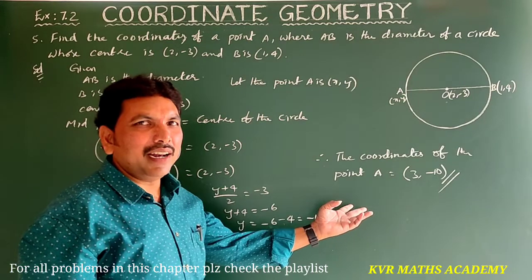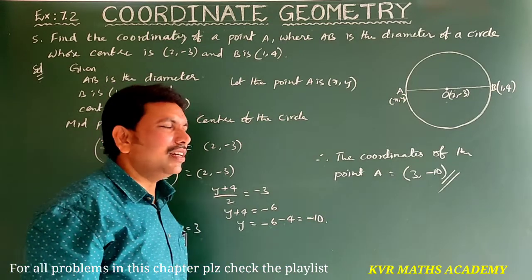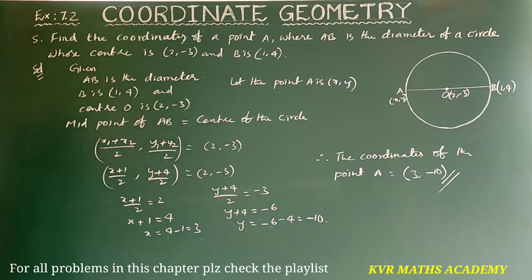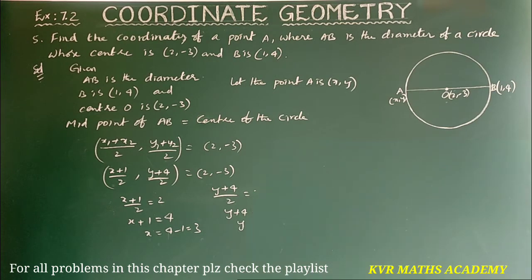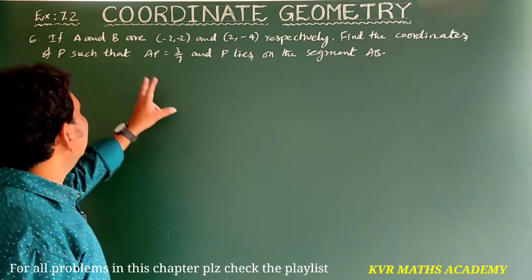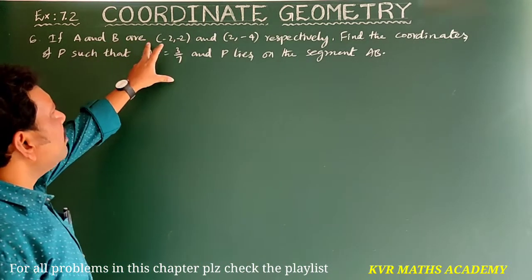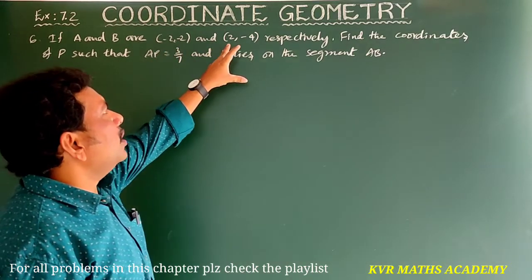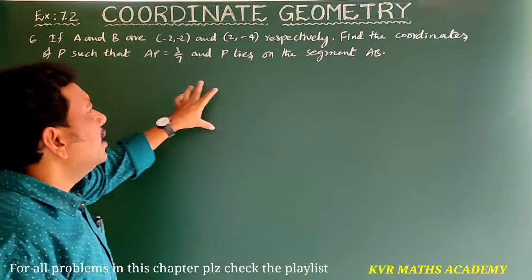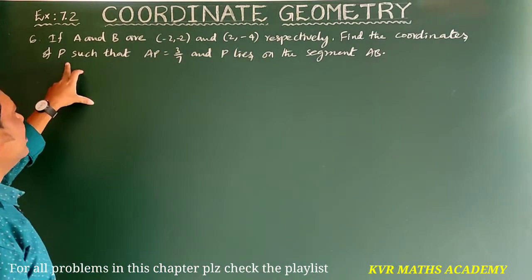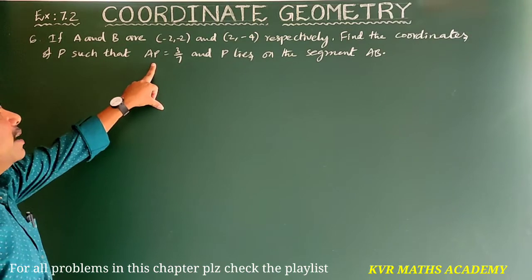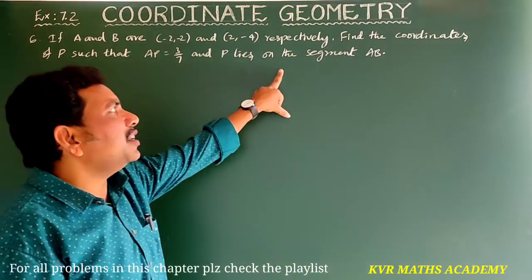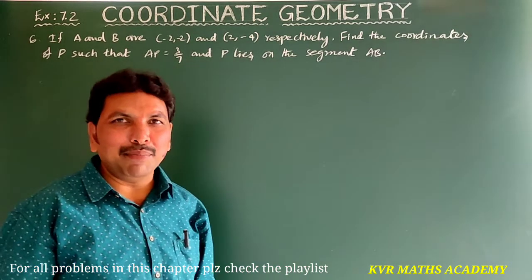Have you understood clearly? Next, the sixth question. If A and B are (−2, −2) and (2, −4) respectively, find the coordinates of P such that AP = 3/7 of AB and P lies on the segment AB.